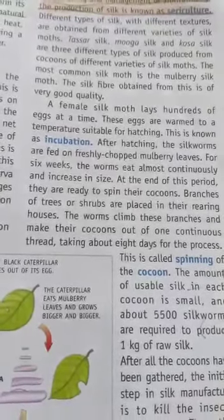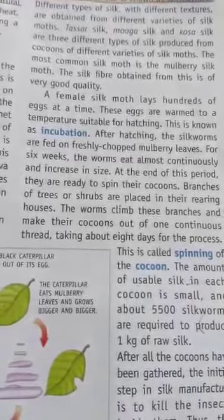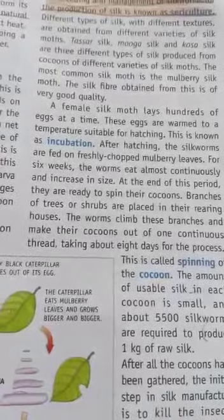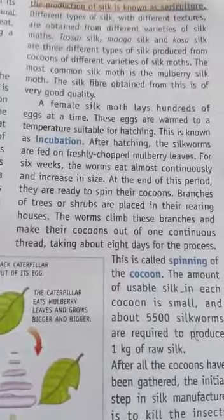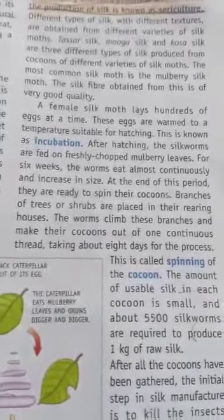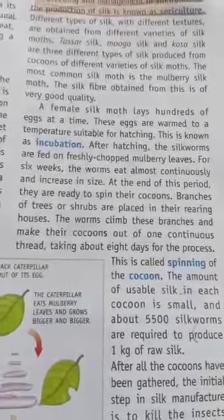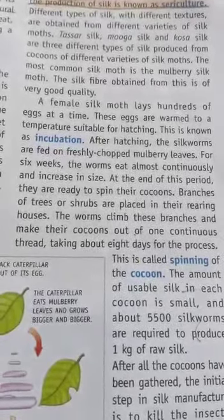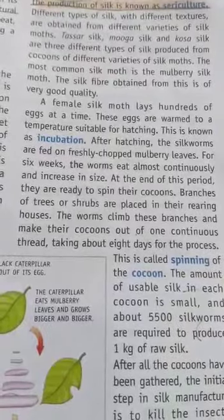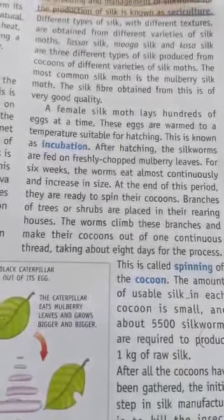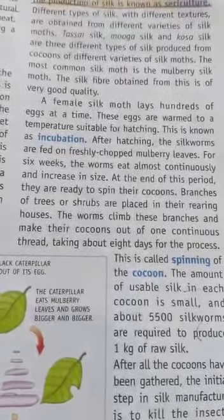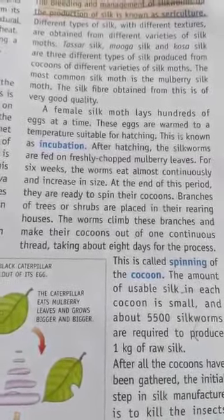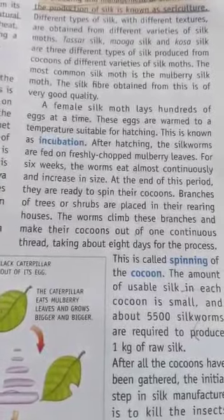Some silkworms are allowed to mature into silk moths so that they can lay eggs to produce more silkworms. There is a variety of silk moths which look very different from one another, and the silk yarn they yield is different in texture — coarse, smooth, shiny, etc. Thus, Tassar silk, Kosa silk, Mooga silk, etc. are obtained from cocoons spun by different types of moths. The most common silk moth is the mulberry silk moth. The silk obtained from the cocoons of the mulberry silk moth is called mulberry silk. Mulberry silk is soft, lustrous, and elastic and can be dyed in beautiful colors.